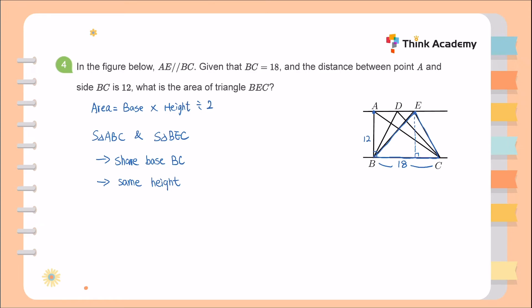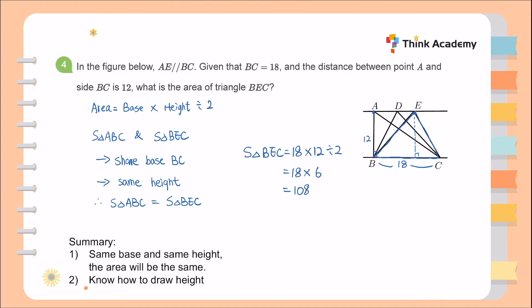Because triangles ABC and BEC share the same base BC and the same height, their areas are equal. Therefore, the area of triangle BEC equals 18 times 12 divided by 2, which is 108. Remember: same base and same height means equal areas, and always draw the height from the opposite vertex perpendicular to the base.